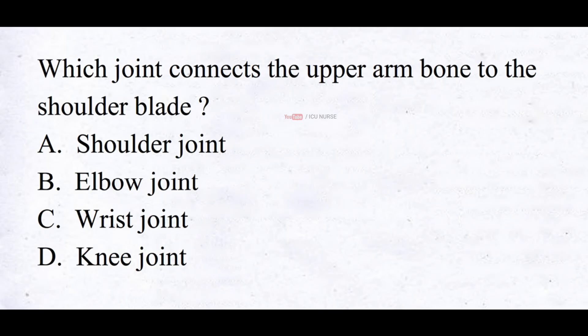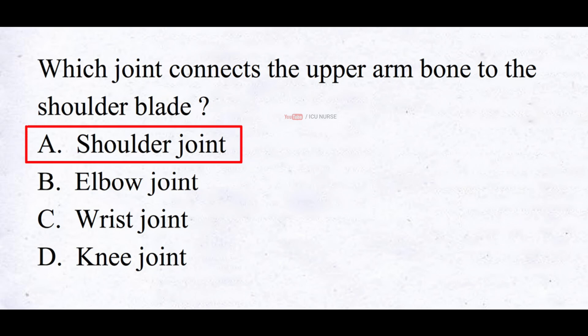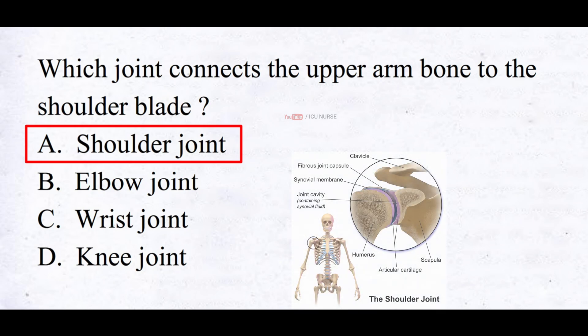Which joint connects the upper arm bone to the shoulder blade? A. Shoulder joint, B. Elbow joint, C. Wrist joint, D. Knee joint. And the correct answer is A. Shoulder joint. The shoulder joint connects the upper arm bone to the shoulder blade.